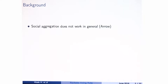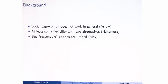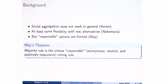The background for this talk is that in general we don't have a good formula for aggregating social preferences, but at least with two alternatives we're not totally out of luck. May's theorem tells us that if we impose a couple of reasonable assumptions on what properties we want our voting rule to have, then majority rule is the only one.